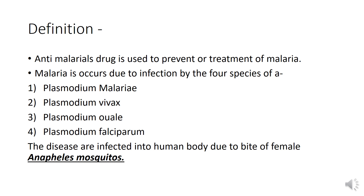Malaria is caused due to infection by four species: Plasmodium malaria, Plasmodium vivax, Plasmodium ovale, and Plasmodium falciparum. The disease is transmitted in the human body.